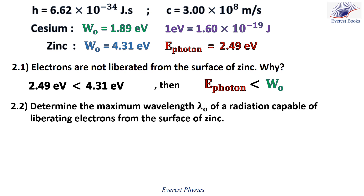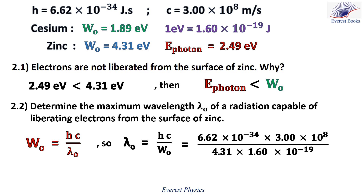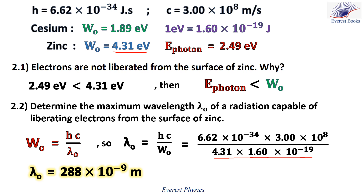Part 2.2: determine the maximum wavelength lambda 0 of irradiation capable of liberating electrons from the surface of zinc. The maximum wavelength can be determined using the relation, rearranged as lambda 0 equals hc over W0. Since hc and lambda 0 are in SI units, W0 must also be in SI units: 4.31 eV equals 4.31 times 1.6 times 10 to the power minus 19 joules. Therefore, lambda 0 equals 288 times 10 to the power minus 9 meters.